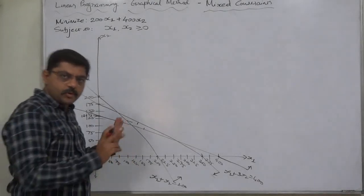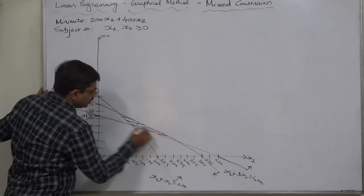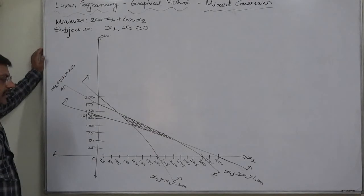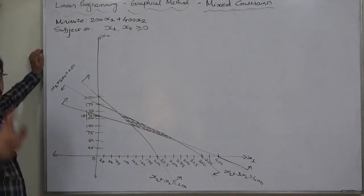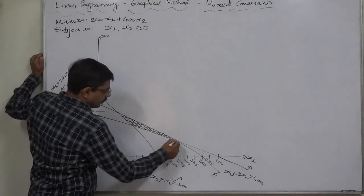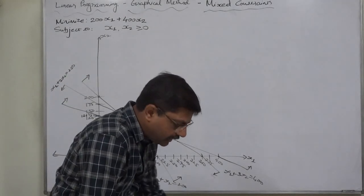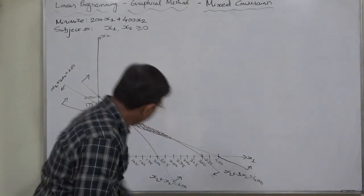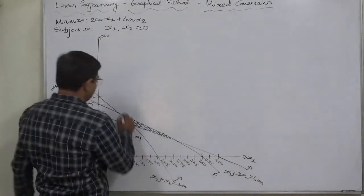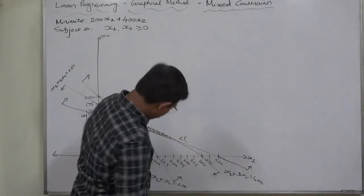In this case, shading is on the outer side; for the second constraint, shading is below the line; and for the first constraint, shading is above the line. This common region of all three constraints is the feasible region. According to the fundamental law of linear programming, the optimal solution lies at a corner point of the feasible region. There are three corner points: A at (100, 100), B at (50, 150), and C at (250, 50).